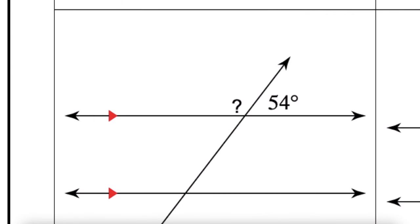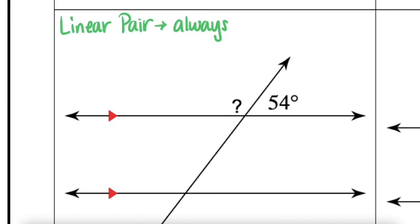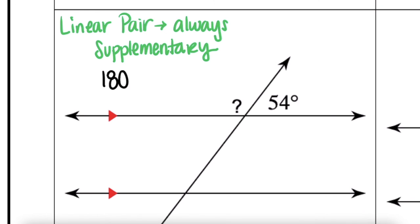How about this one? These are clearly a linear pair. Linear pairs are always supplementary regardless of whether the lines are parallel or not. So to find the missing angle, we do 180 minus 54, which gives us 126 degrees.